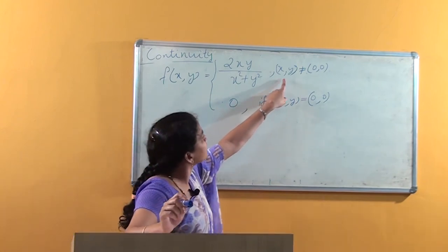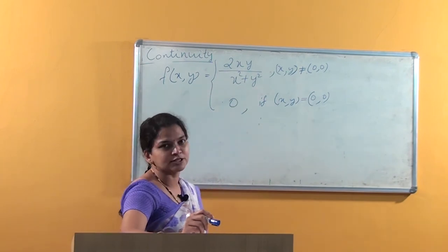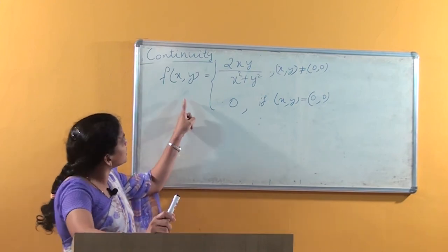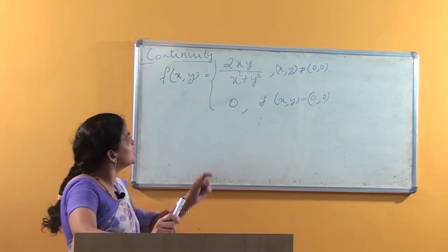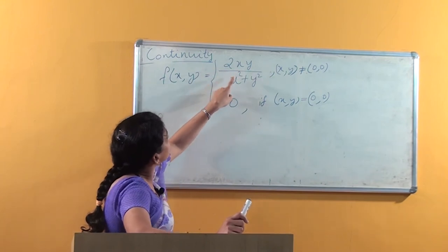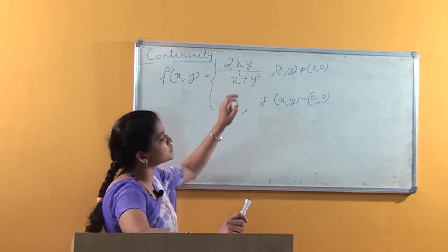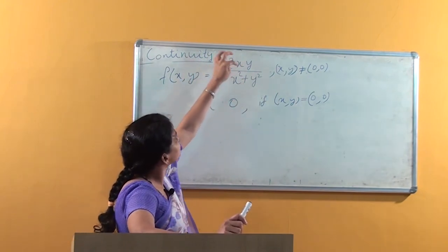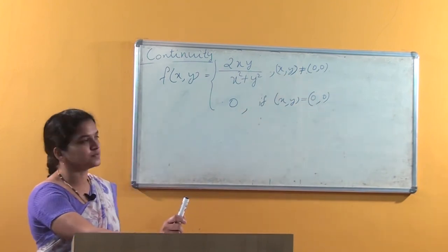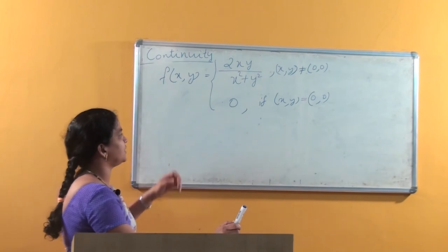By the definition, except at the origin where (x, y) is not equal to (0, 0), the function value is 2xy divided by (x² + y²). As in the case of functions of a single variable, the quotient of two continuous functions is continuous. We know that 2xy is a continuous polynomial function, and x² + y² is also a continuous function and not equal to 0. So both are continuous functions, and therefore 2xy/(x² + y²) for (x, y) not equal to (0, 0) is a continuous function. For any point except at the origin, this function is continuous.